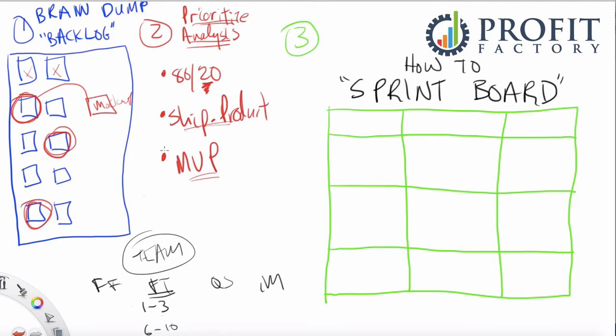Okay, so we've done our backlog brain dump. We've done an analysis. We've identified these three projects or tasks as being 80-20 important, and we've also figured out a version of them that we could actually ship, make live, put in front of customers. So now it's time to take these three and actually put them over into the sprint board.